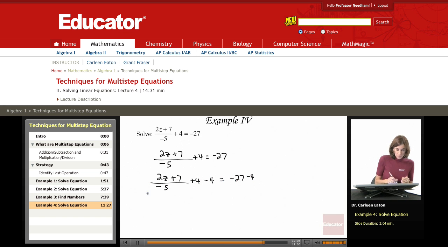So subtracting 4 from both sides gives me 2z plus 7 divided by negative 5 equals negative 31.